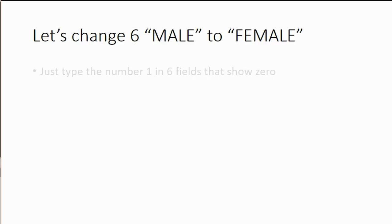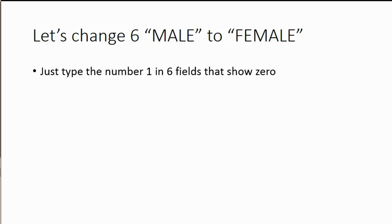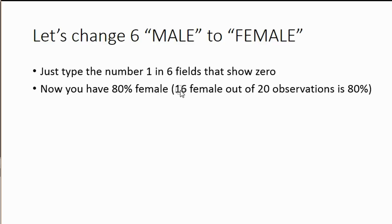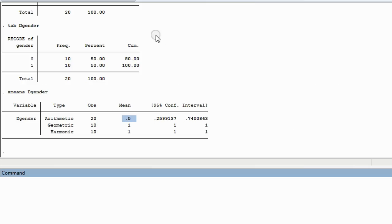Now let's change 6 males to female — just type the number 1 in 6 of the fields that show 0. That changes 6 of these from male to female, so we will have 16 ones and only 4 zeros. That means out of 20 observations, if 16 equal one and 4 equal zero, that means you have 80% female. So now you have 80% female, because there are 16 female out of 20 observations. Let's see if we get that number.